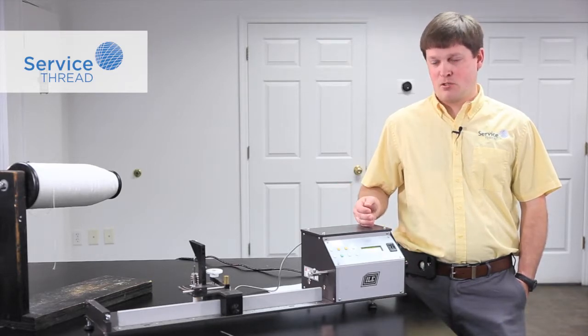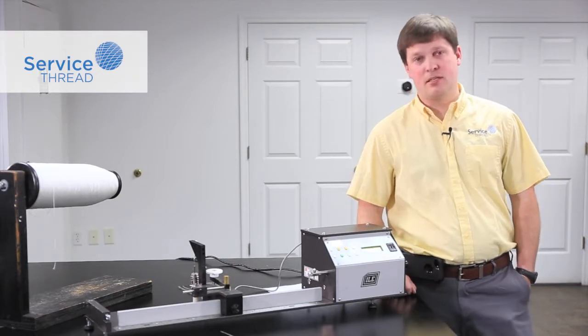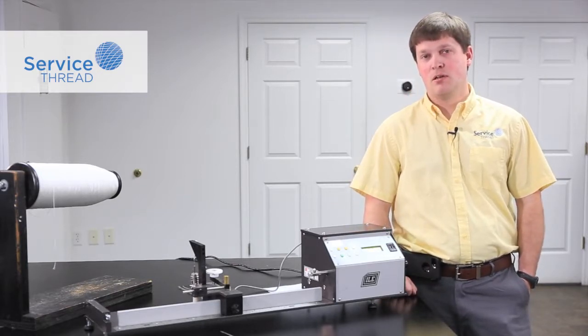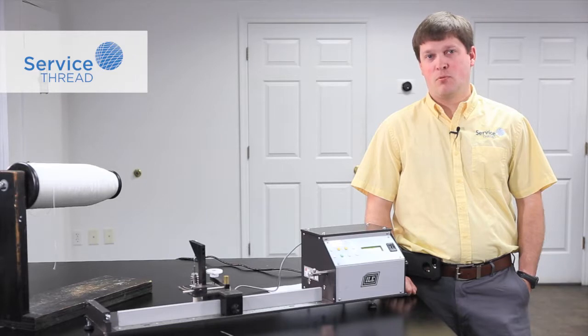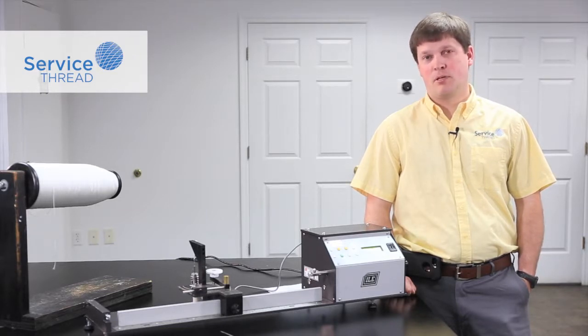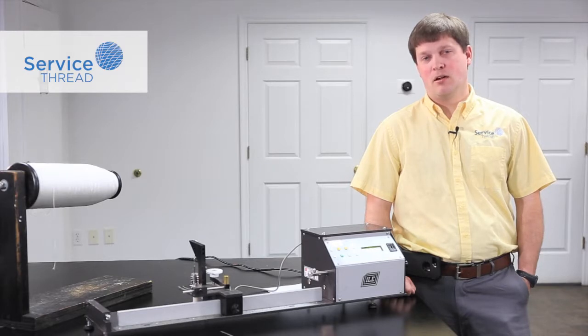There's a couple of different ways that we can test twist and it's all based on ASTM D1423. We're going to demonstrate two different ways that we check twist. One is the direct count method, which we typically use in plied yarns, and the other is a twist and untwist method, which is used more in single yarns and high twist yarns.